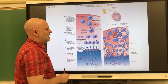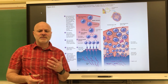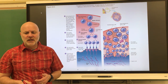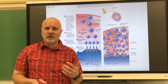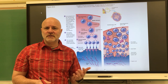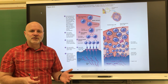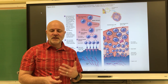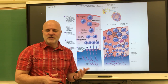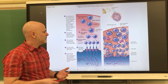Let's move on to gametogenesis, because that's what we're trying to do — make gametes. Gametogenesis is the formation of gametes. Two types: one is spermatogenesis, which is the formation of sperm in the testes by meiosis.